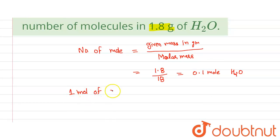1 mole of a substance equals 6.023 × 10^23. This is Avogadro's number.